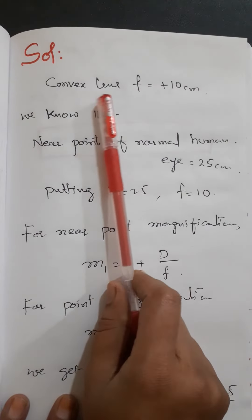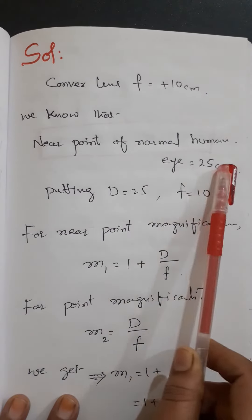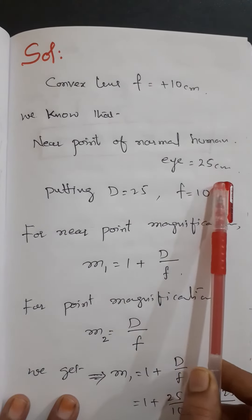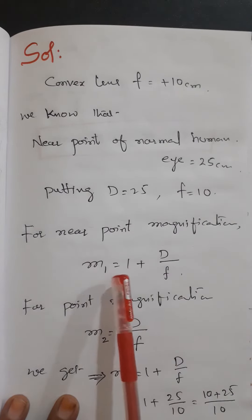Now we know that the near point of normal human eye is 25 centimeters. The magnification for near point is M₁ = 1 + D/F, and for far point, the magnification M₂ = D/F.